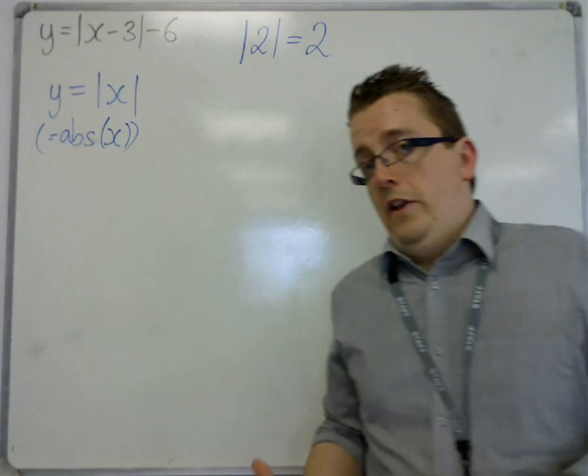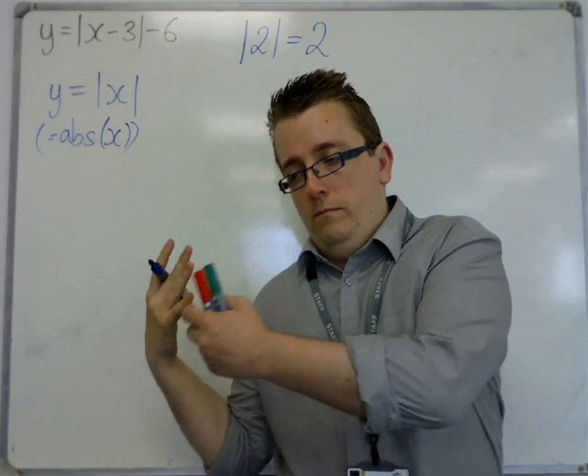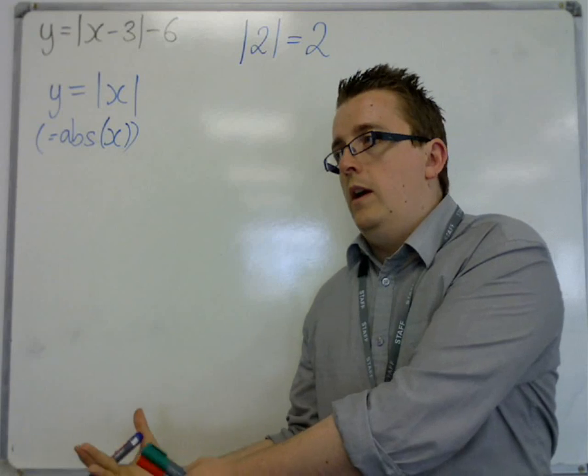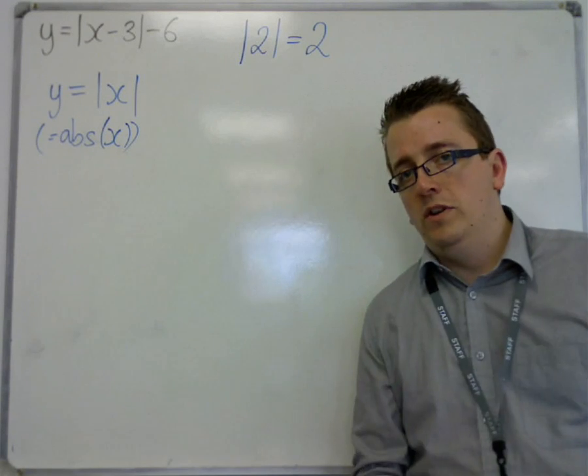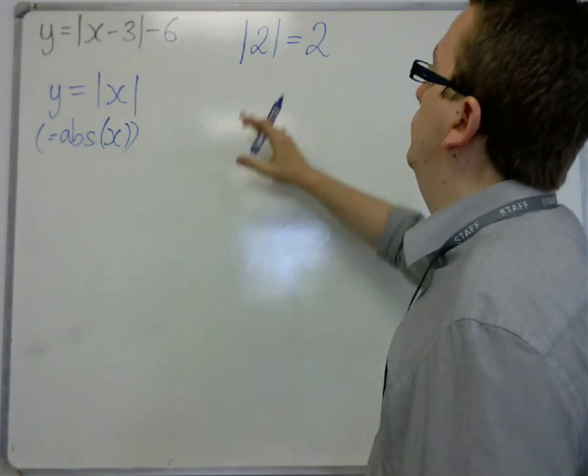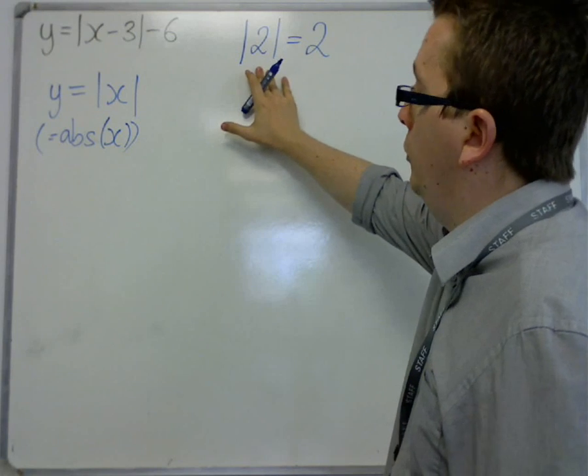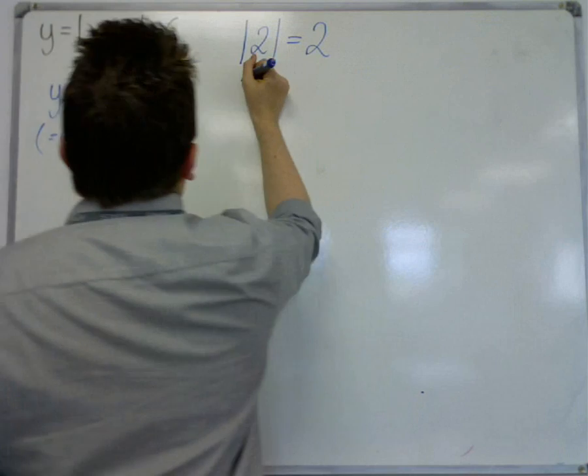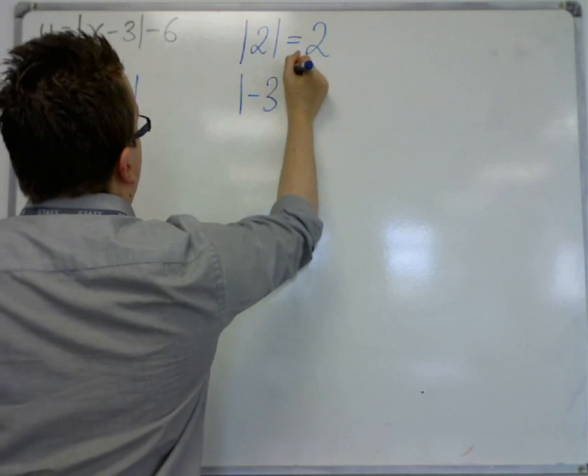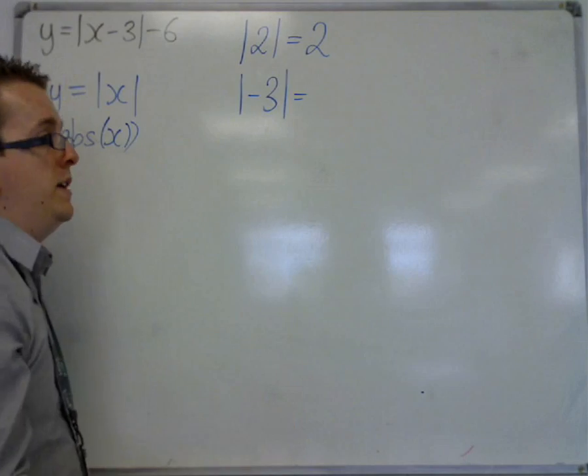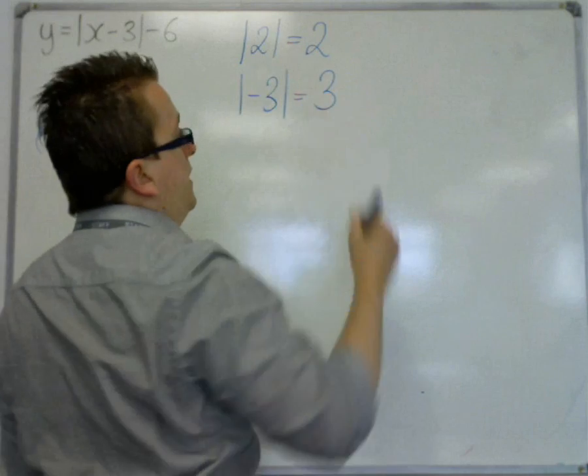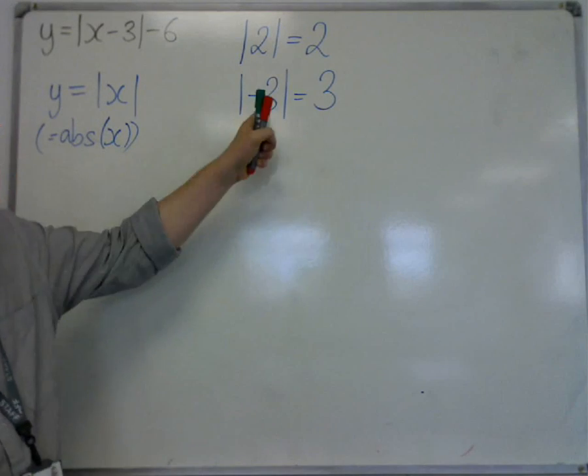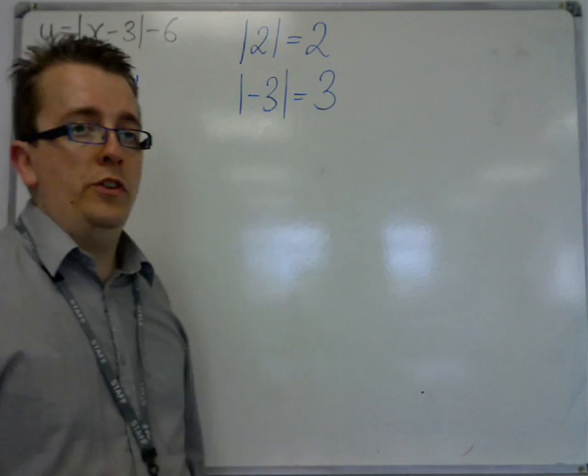Because it's a function that makes all entries, all numbers that are coming in, all the real numbers, positive. So 2 was positive to start off with, and so it is still positive. However, if you did the mod of minus 3, well, that would be 3. We can't have a negative length, so that's just 3.